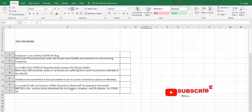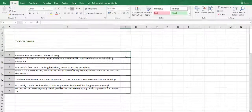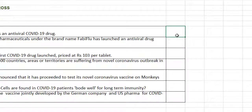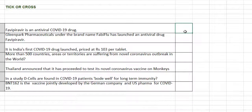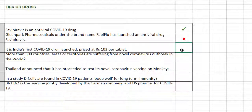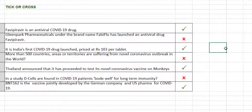First we are going to do tick and cross. What is tick and cross? Here if I am typing, see — there are seven questions, whether it's right we can tick it, and if it is wrong we can mark it wrong. This is right, this is wrong, this is right and this is wrong. So tick and cross we can put with green color and red color.